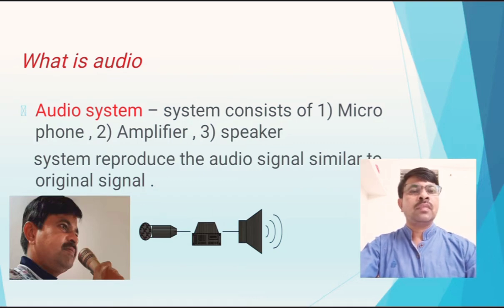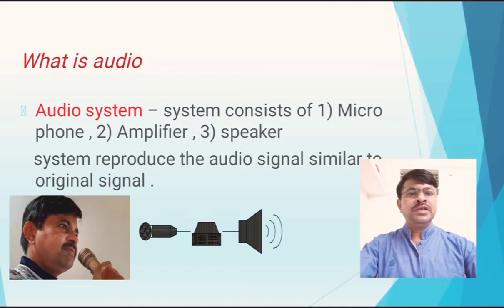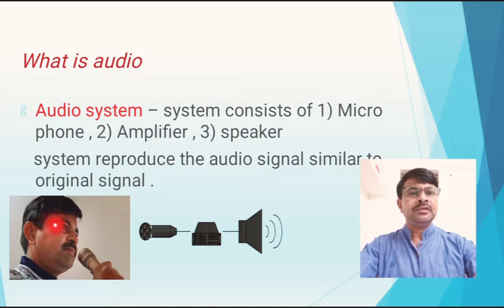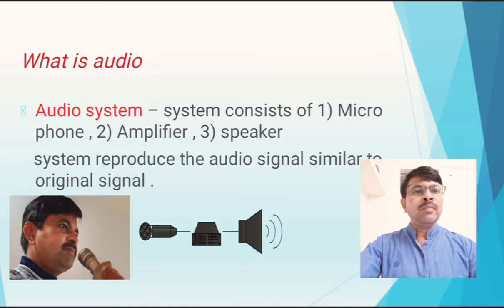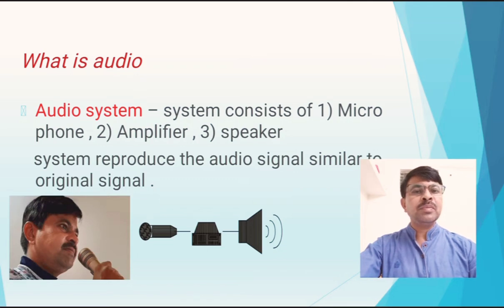What is an audio system? The important blocks of an audio system are microphone, amplifier, and speaker. As you see on your screen, I am holding a mic in hand, and the output of this microphone is connected to the amplifier, and the amplifier output is connected to the speaker. The function of the microphone is to convert my voice signal into an electrical signal. The function of the amplifier is to amplify the microphone output signal. The function of the speaker is to generate sound waves similar to the original sound signal.